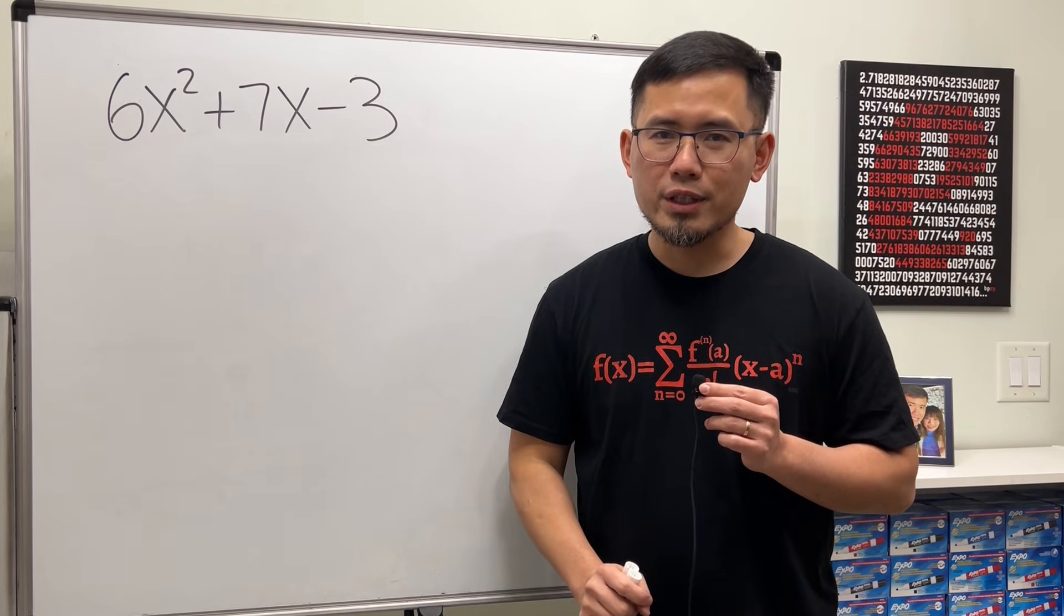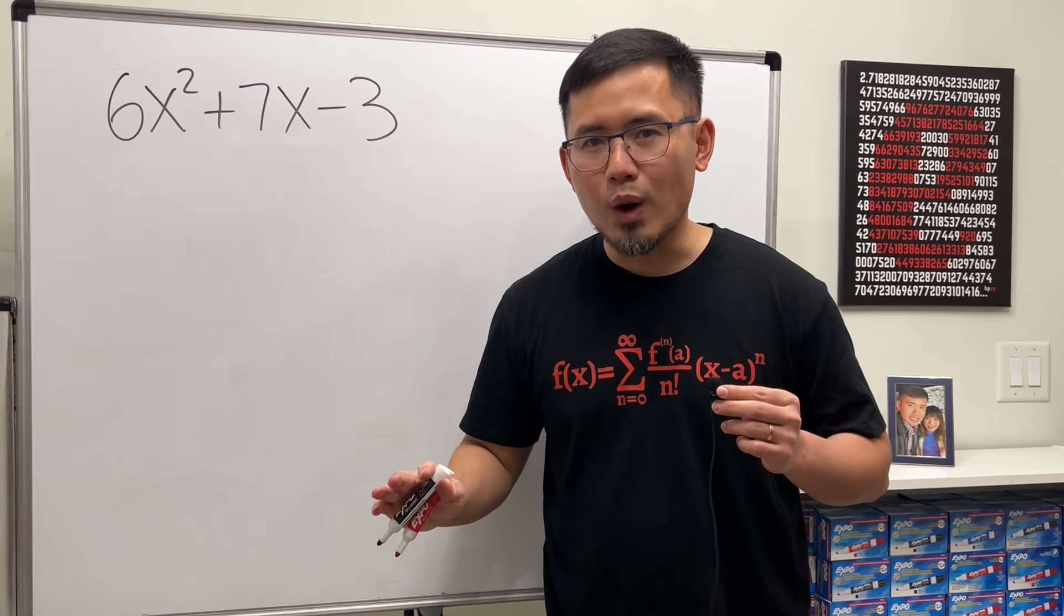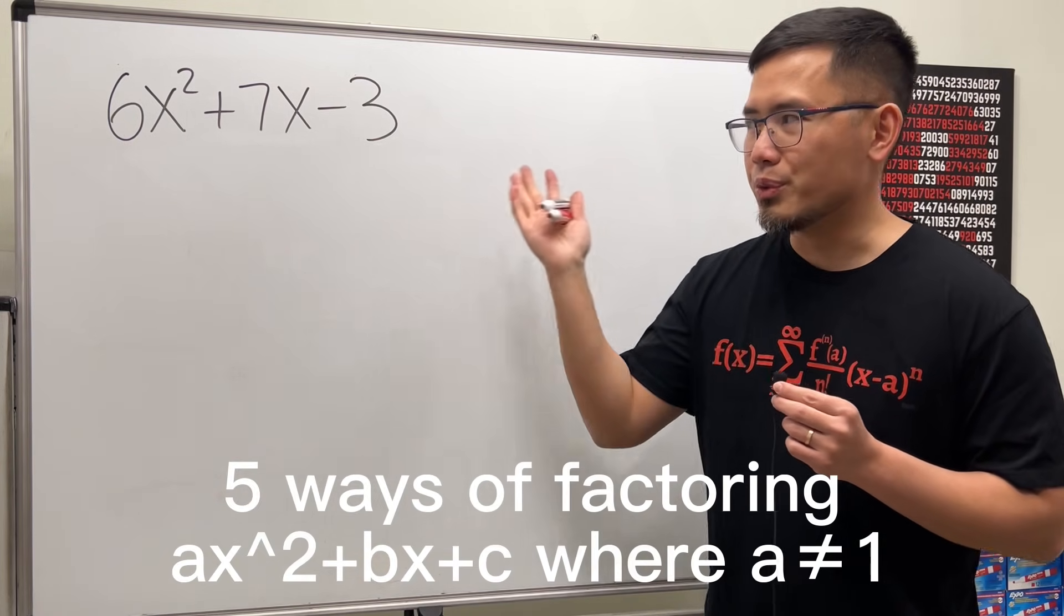If you are struggling with factoring quadratic trinomials like this, where the leading coefficient here is not equal to 1, then this video is for you, because I'll show you 5 different ways to do it.